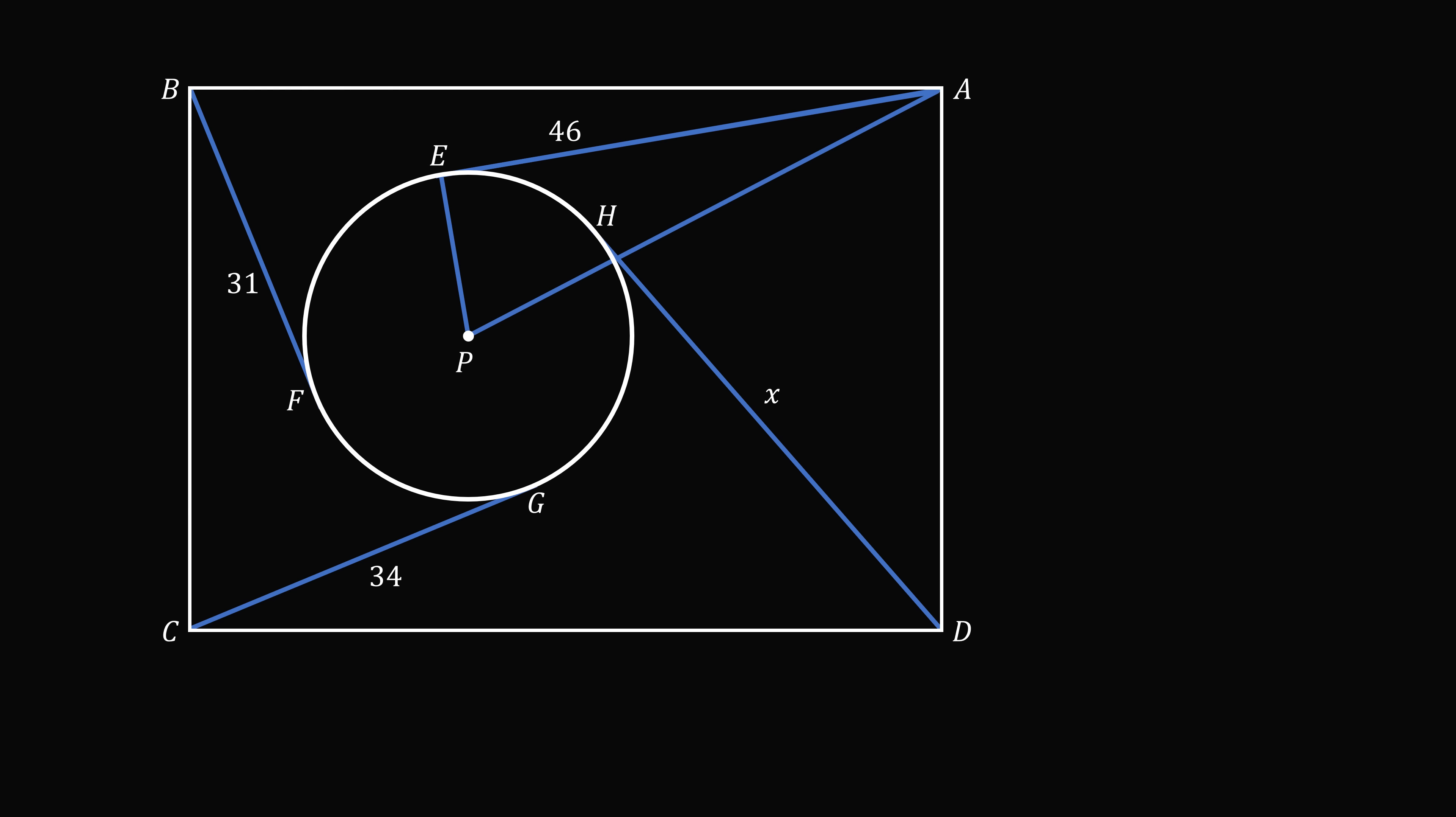Construct triangle AEP. Since AE is a tangent to the circle, AE is perpendicular to EP. Since we have a right triangle, AE squared plus EP squared is equal to AP squared.